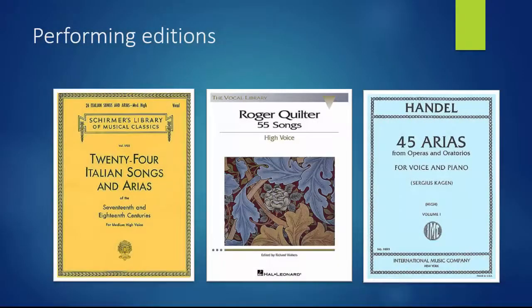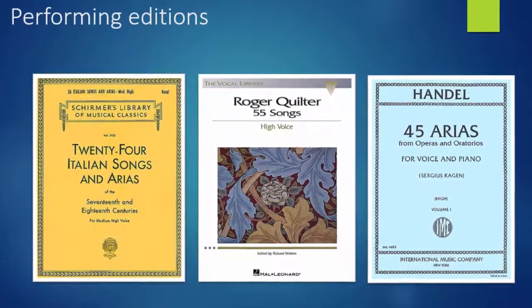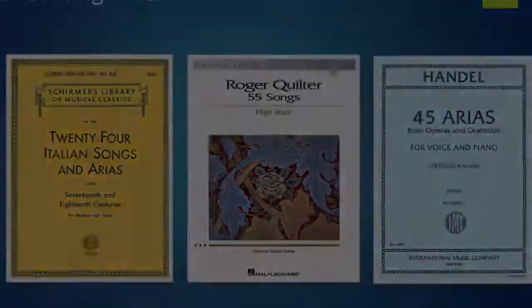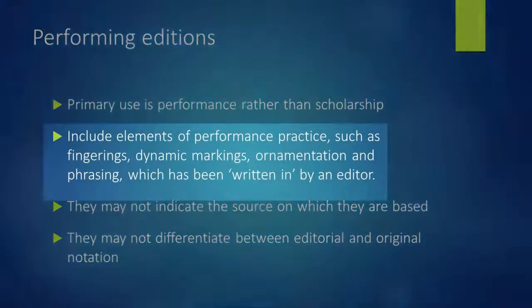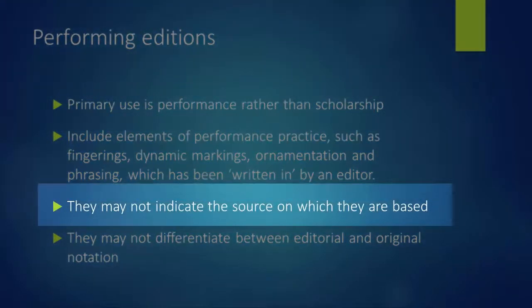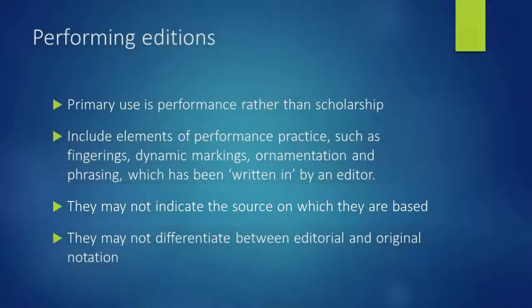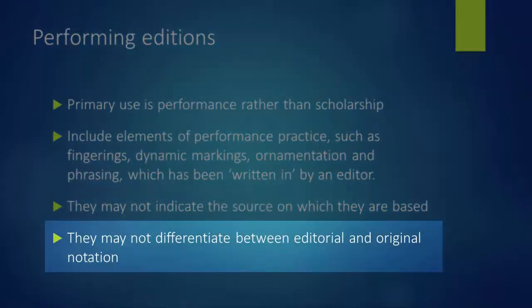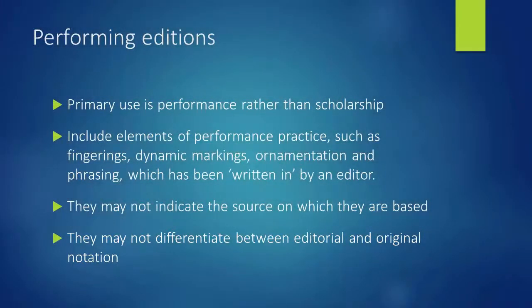Historical editions are contrasted with performing editions, otherwise known as practical editions. Designed to help the modern performer, performing editions include elements of performance practice such as fingerings, dynamic markings, ornamentation, and phrasing that has been written in by the editor. They may not indicate the source on which they are based, and may not differentiate between editorial additions and original markings. Within the performance editions, there is a great variation in quality and price.